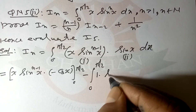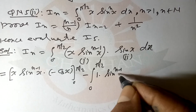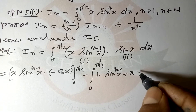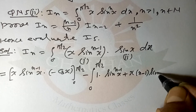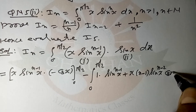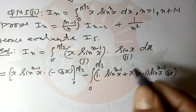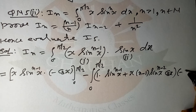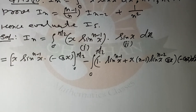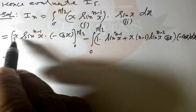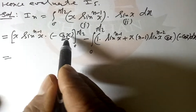Minus the integral of: derivative of first, which includes sin^(n-1)(x) plus x times the derivative of sin^(n-1)(x), which is (n-1)·sin^(n-2)(x)·cos(x), all into cos(x) dx.